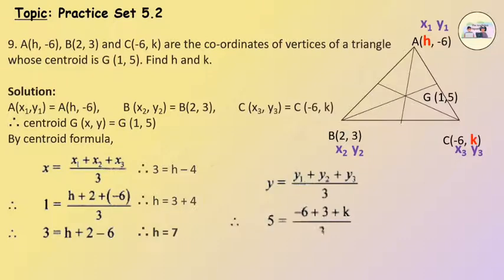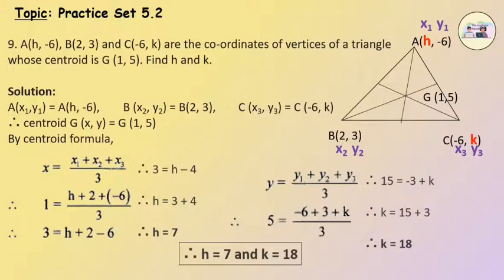y equals y1 plus y2 plus y3 upon 3. Therefore, 5 equals minus 6 plus 3 plus k upon 3. Therefore, 15 equals minus 3 plus k. Therefore, k equals 15 plus 3, so k equals 18. Therefore, h equals 7 and k equals 18.